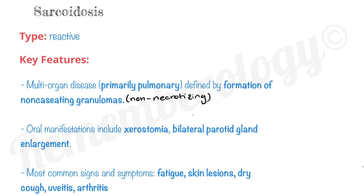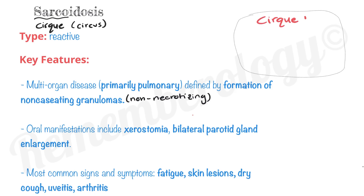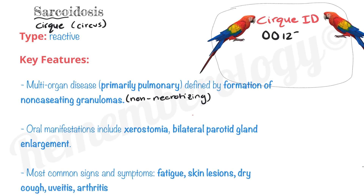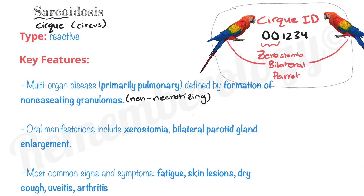To remember the oral manifestations, we give sarcoidosis a nickname: 'sarcoi' sounds like 'circ' or circus. So here is the 'circ ID' card, and the ID number always starts with zeros — zero stands for xerostomia. A very important bird in the circus is the parrot, so on the circ ID we have bilateral parrots, meaning bilateral parotid enlargement in sarcoidosis.